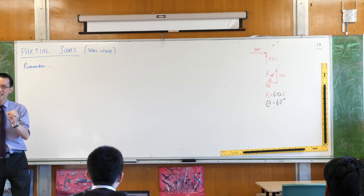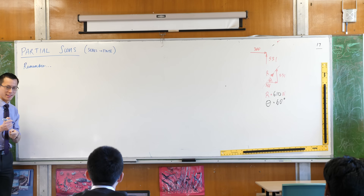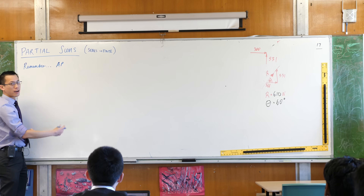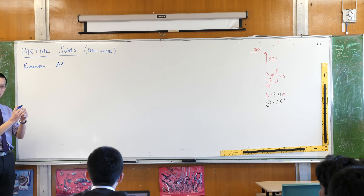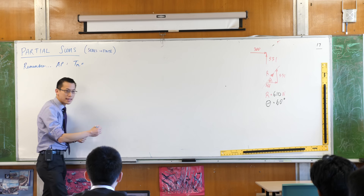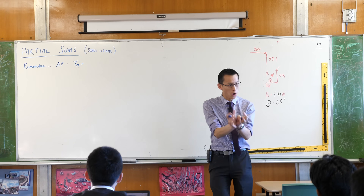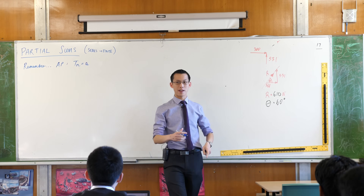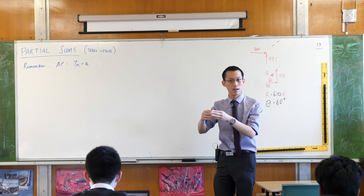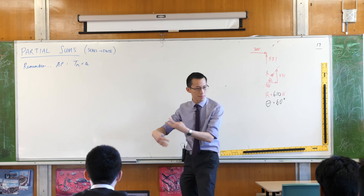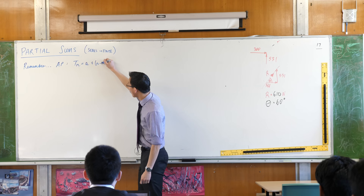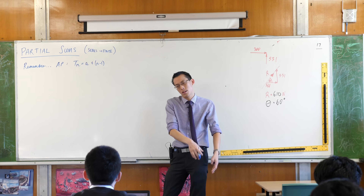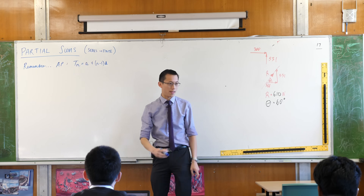Now under progressions, we looked at two particular kinds of progressions with some very handy acronyms. We talked about APs, or arithmetic progressions, and what we developed was a formula for the nth term in an arithmetic progression. We always start with the first term which we called A, and then because an arithmetic progression is about adding a common difference, the number of common differences you add is always one less than the term you're on. The first term has none, the second term has one, the third term has two.